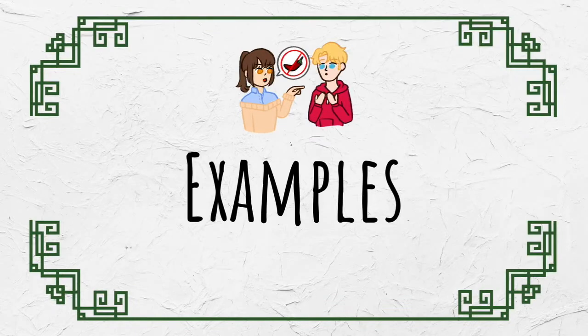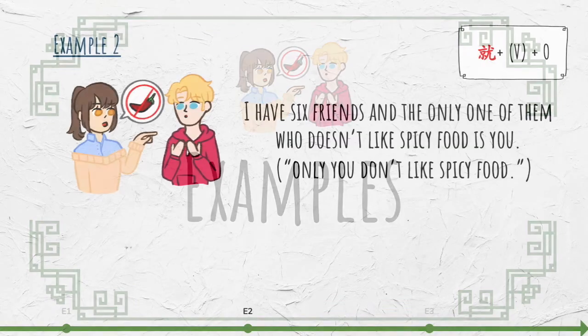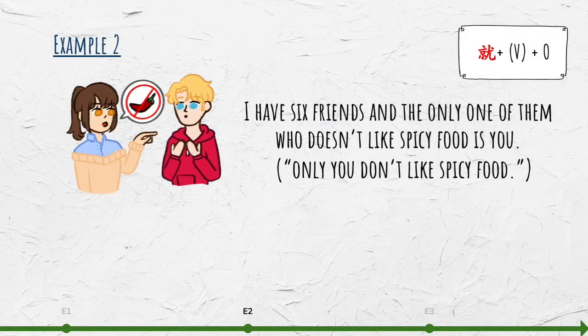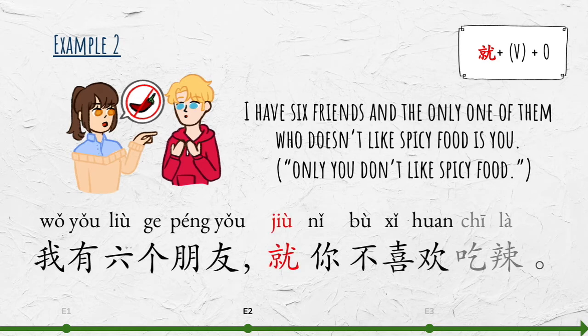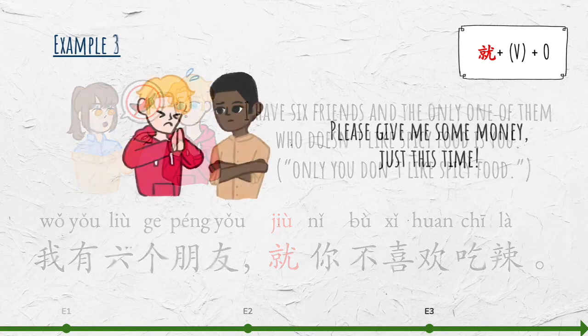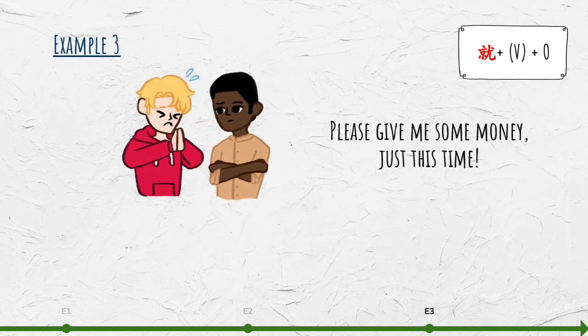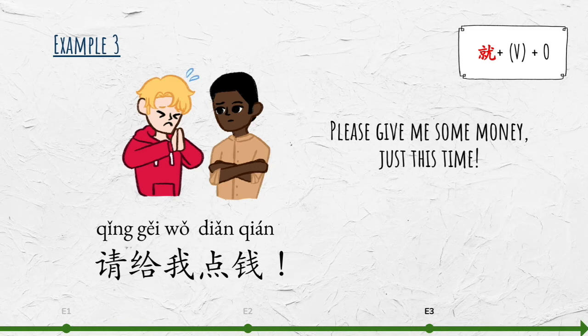Here are some more examples. I have six friends, and the only one of them who doesn't like spicy food is you. Literally, only you don't like spicy food. 我有六个朋友,就你不喜欢吃辣。 Please give me some money, just this time. 请给我点钱,就这一次。